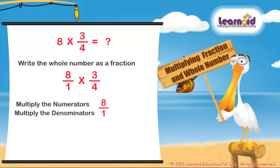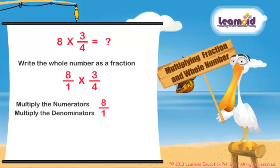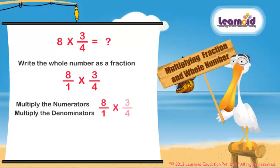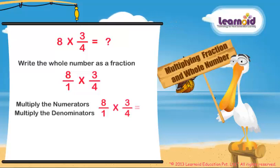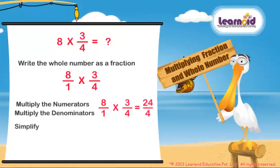Multiply the numerators and multiply the denominators. 8/1 into 3/4 equals 24/4.